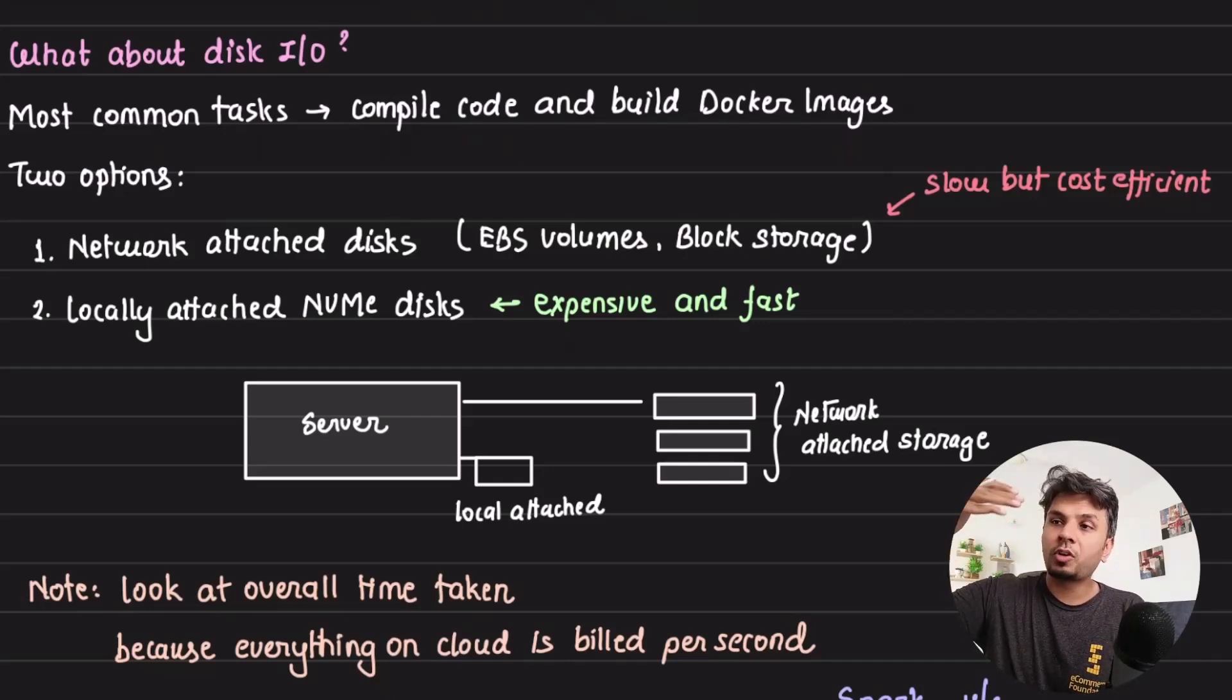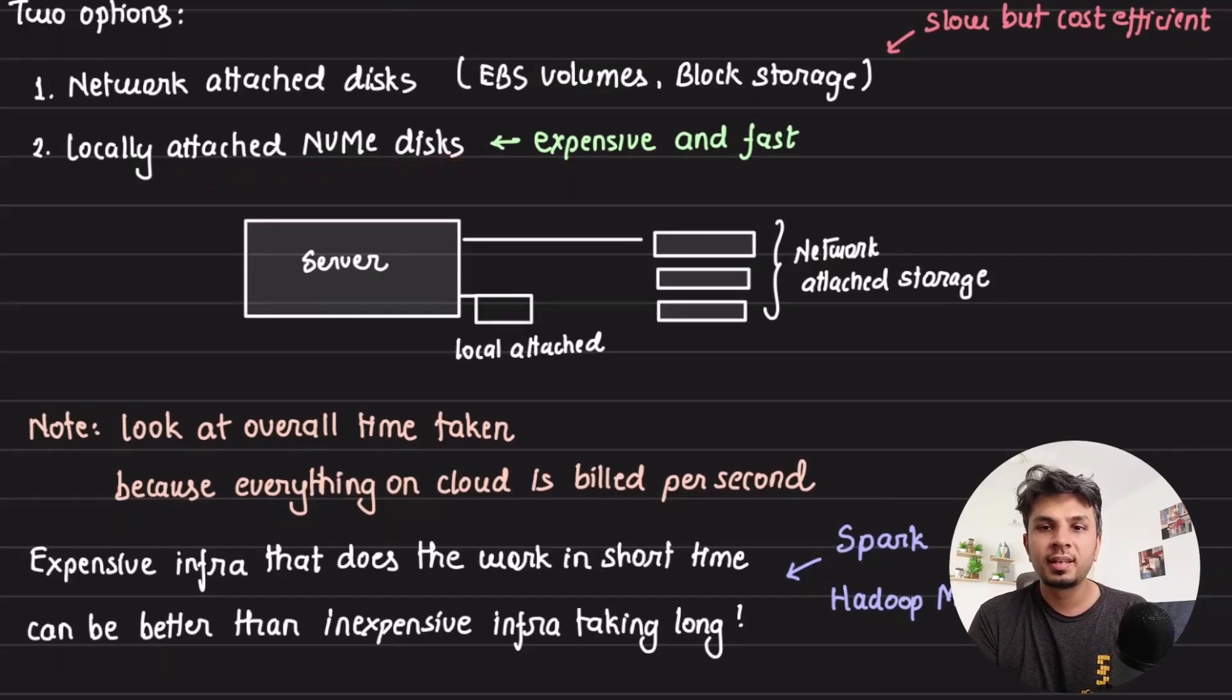So these are regular, what GitHub regular runner uses. On the other hand, Blacksmith goes for something much more expensive. They use locally attached NVMe disks. Now with this, these are obviously expensive, but because there is no network involved in it,